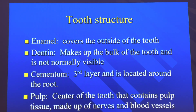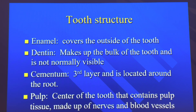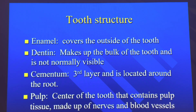The enamel covers the outside of the tooth. The dentin makes up the bulk of the tooth and is underneath the enamel — it's normally not visible. Some things that might cause it to be visible include if your tooth breaks off, if you wear your teeth down from grinding, or just over time from chewing as you age. And it's not that white enamel you see — it's that yellowish dentin.